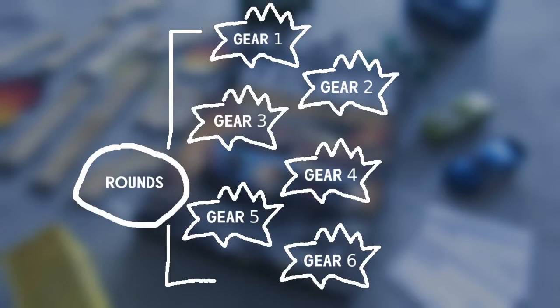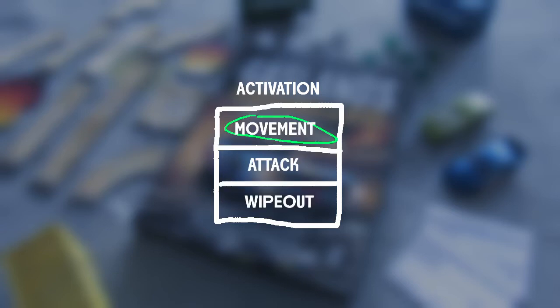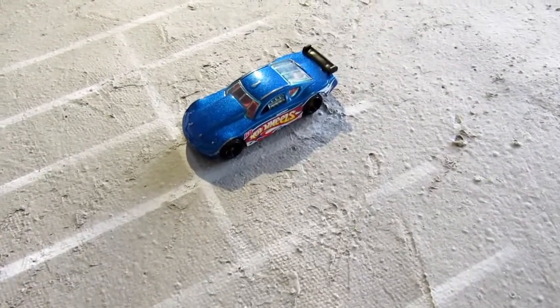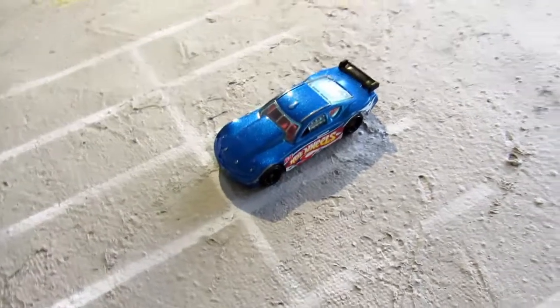We are now headed into the structure of a Gaslands round, so let's break down what it takes to finish an activation. Now as we know, each round is made up of 6 gear phases, in which each car has a chance to activate once. Within each activation, there are 3 further steps. The first step is often the most busy, it is the movement step, and we'll be having a look at that first.